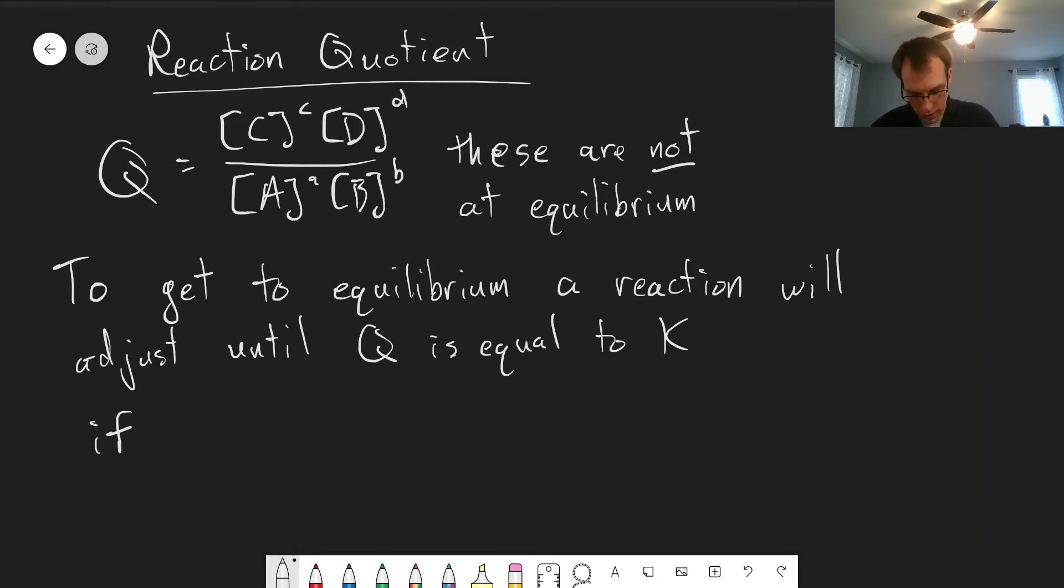If we have a value of Q that is less than K, what has to change to get Q to become K? Well, that means we have to increase the values of C and D, our numerator. So numerator has to increase.